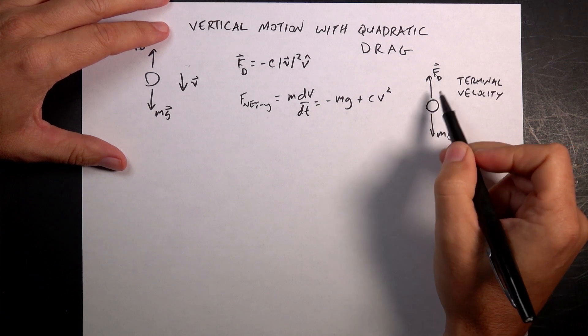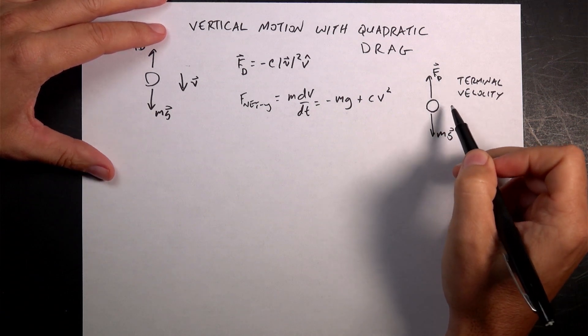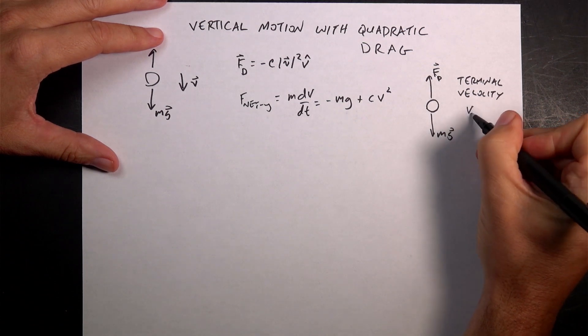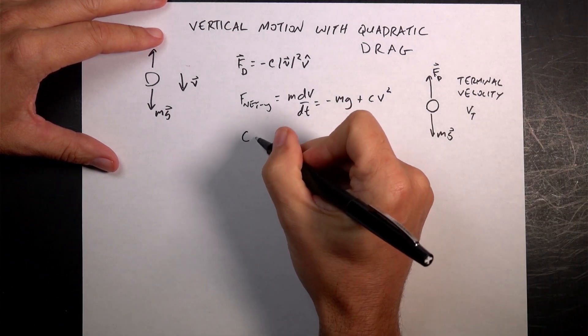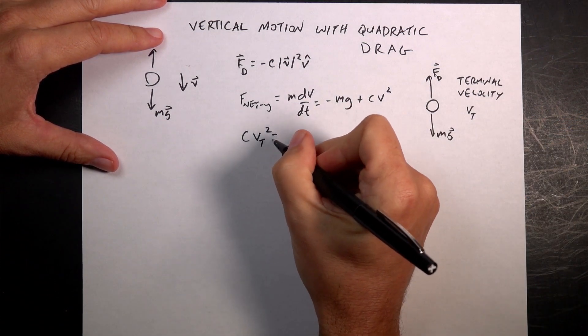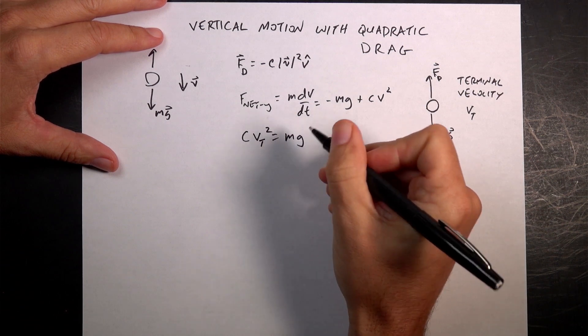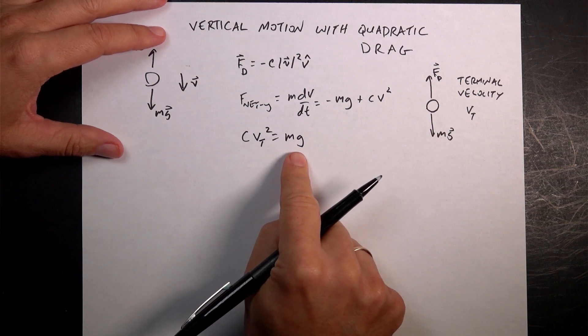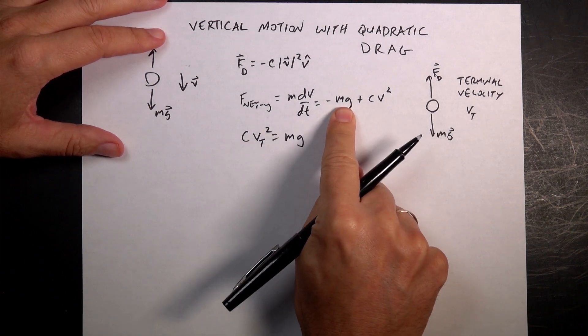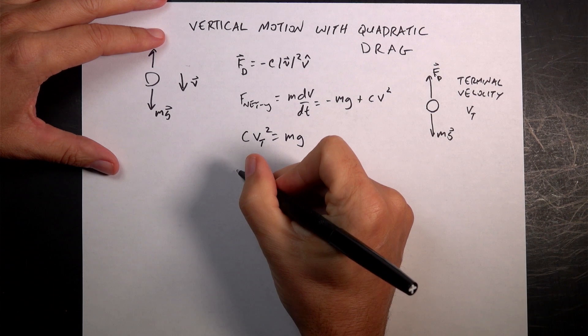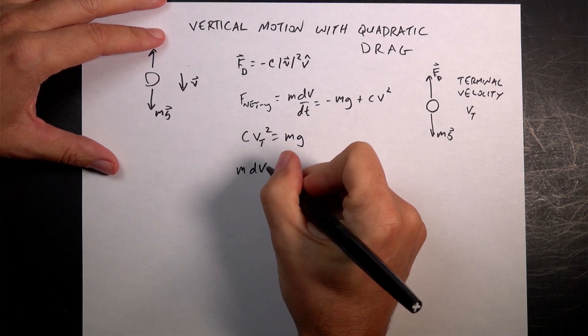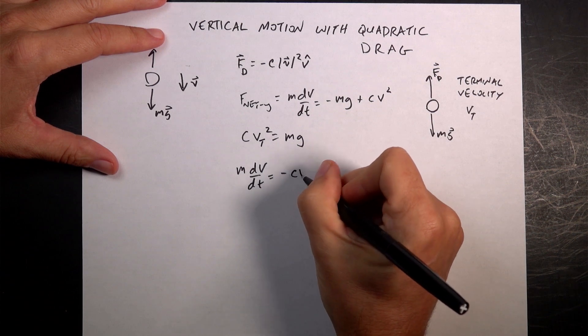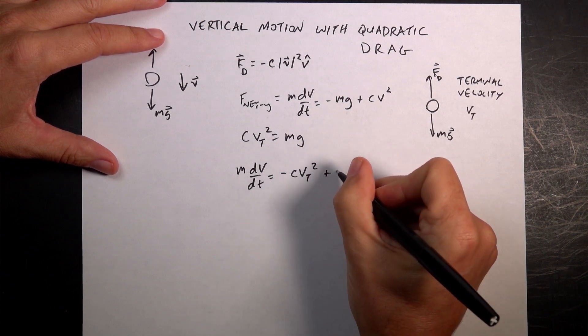So at terminal velocity, those two are equal. So I can write the terminal, this is going to be Vt. So CVt squared equals Mg. The magnitude of the terminal velocity squared is M, and that's the magnitude of the gravitational force. So I can put that in up here for this,